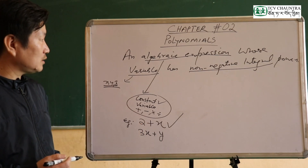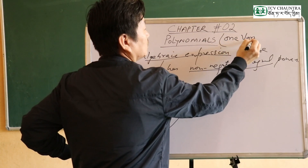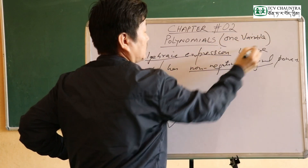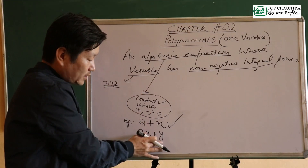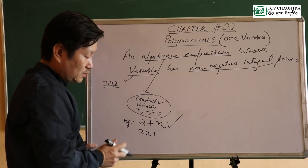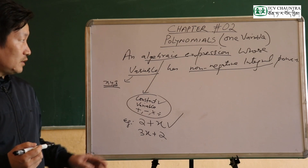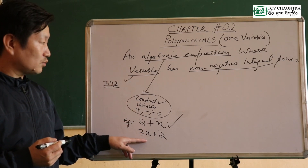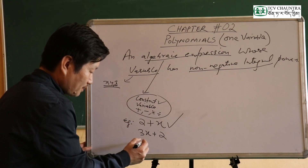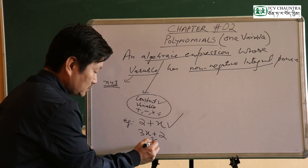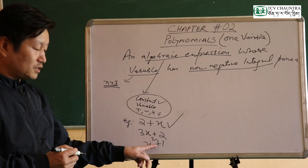We have polynomials in one variable. For example, x plus 1 is a polynomial in one variable, where x is the variable and plus is the addition operation.